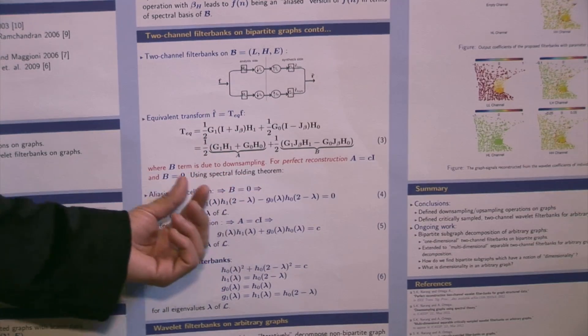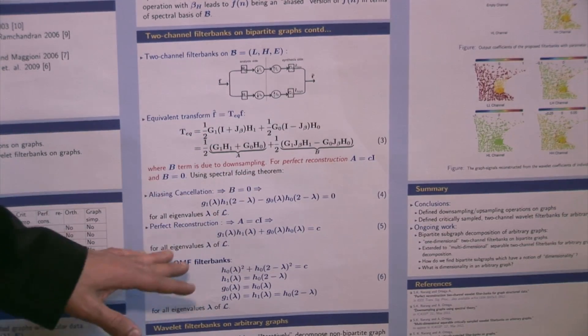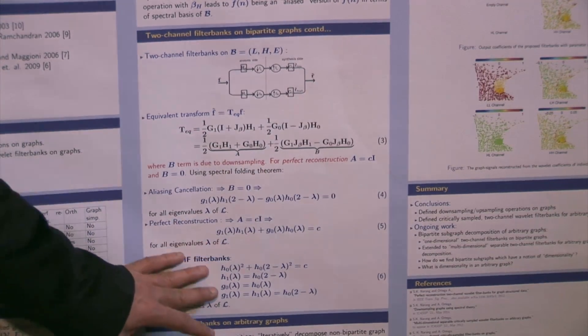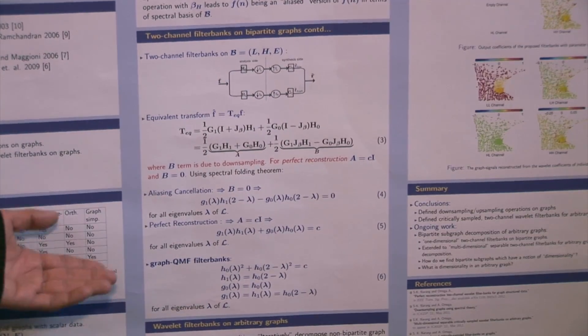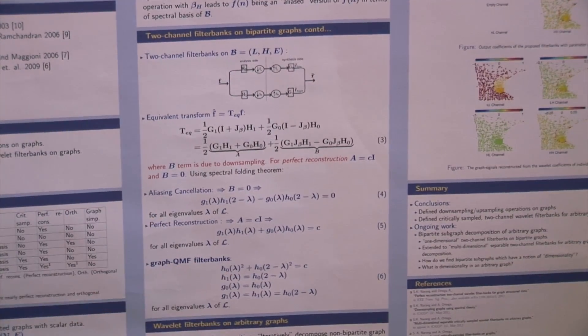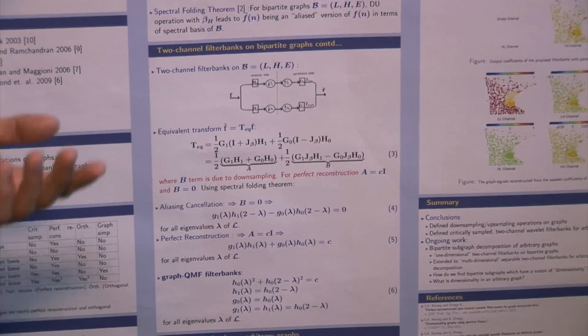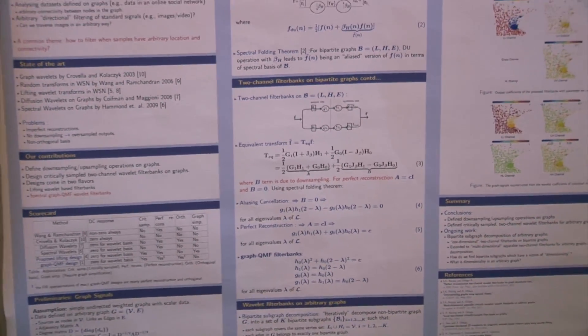We see that the equivalent transform can be algebraically represented. And if we apply spectral folding theorem, then we can apply the condition of aliasing cancellation and perfect reconstruction in very simple terms. In fact, we go ahead and propose graph QMF filter banks, which are exactly analogous to the quadrature mirror filter banks found for the 1D signal.